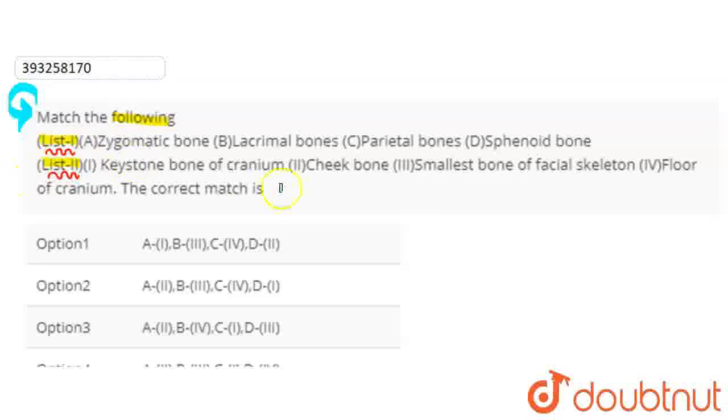Okay, so the first one is the zygomatic bone. In the human skull, the zygomatic bone is our cheekbone or malar bone. You can see here we have cheekbone which is in list two. On that basis, we will match it here with the second option.